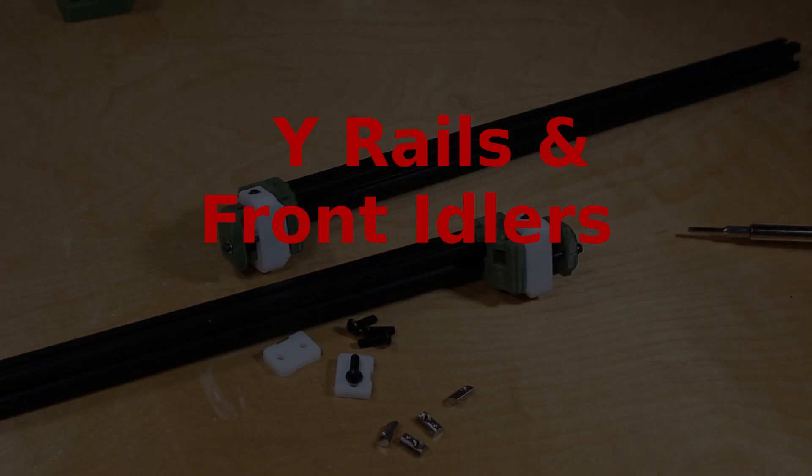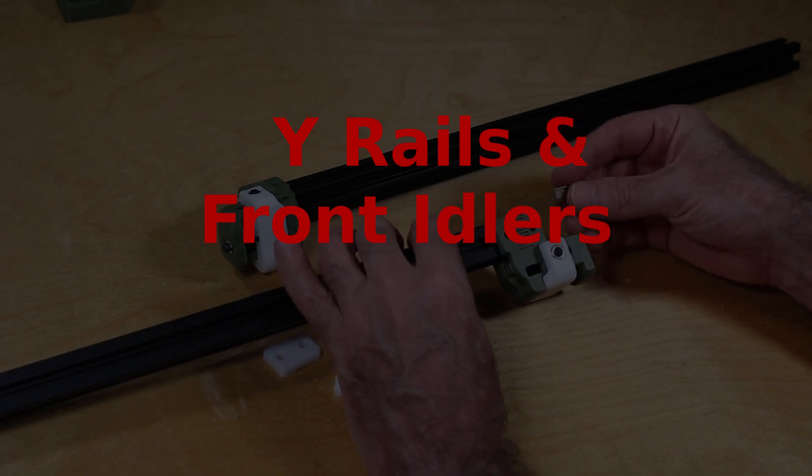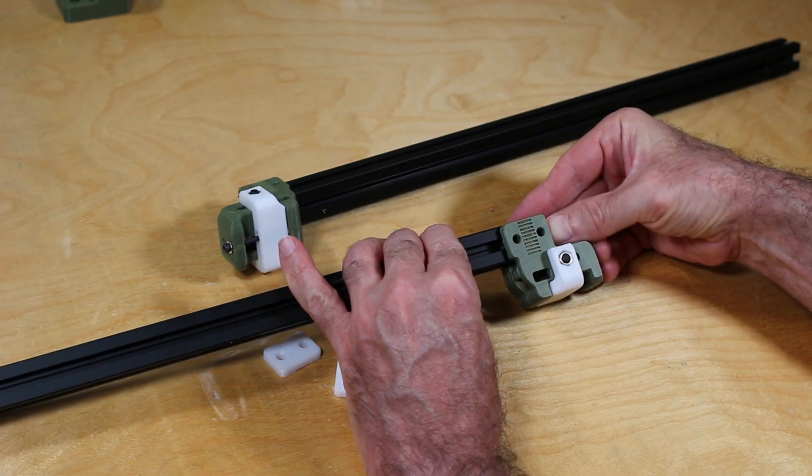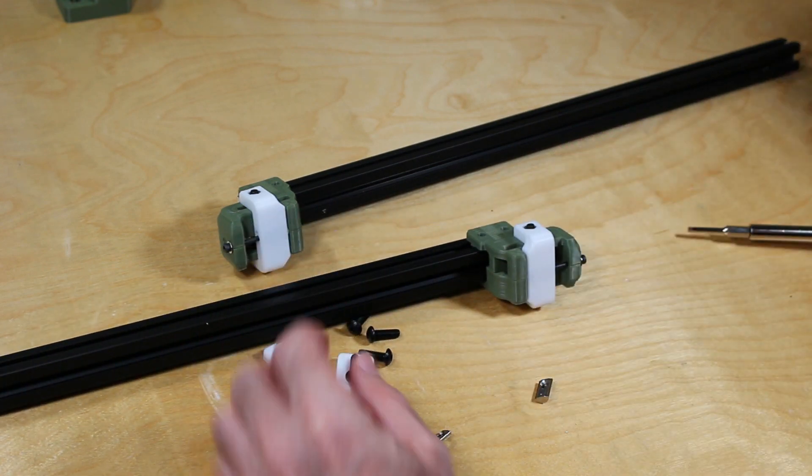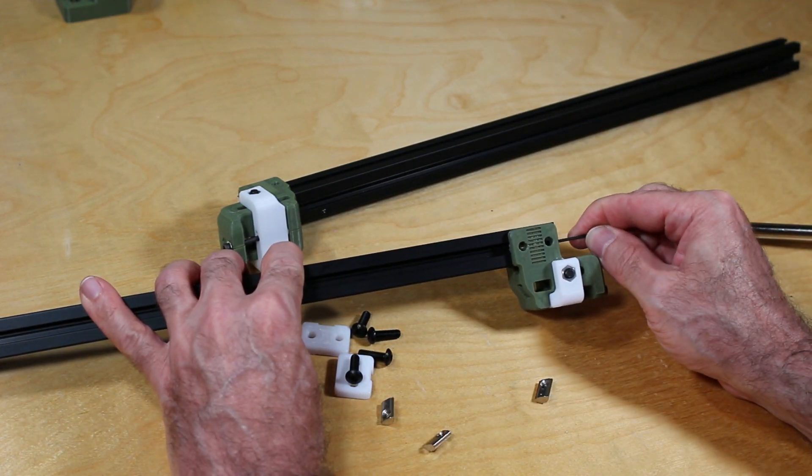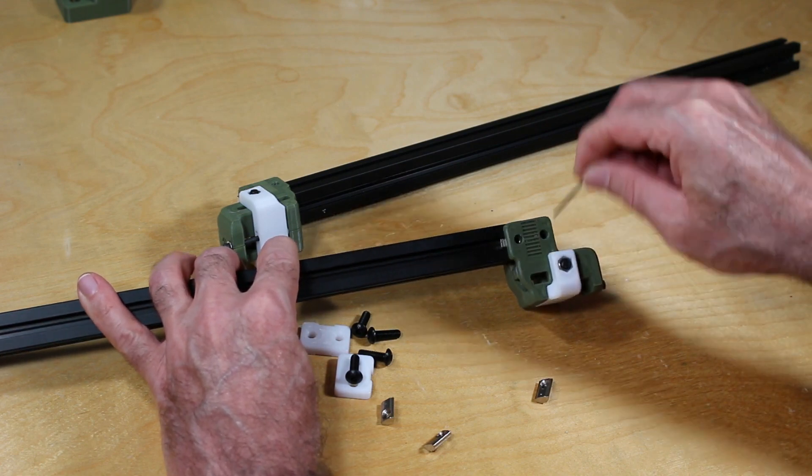And now we'll add the front idlers on the wire rails. Make sure you install the M5 T-nuts. You can slide them in from the side here if you choose. In this case, I've already inserted one. I need to shove it a little bit further in.